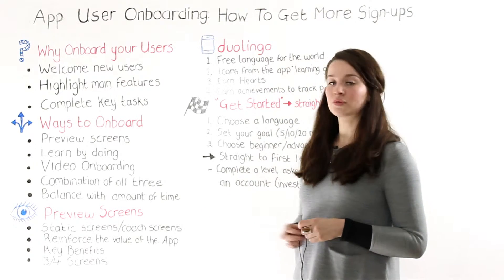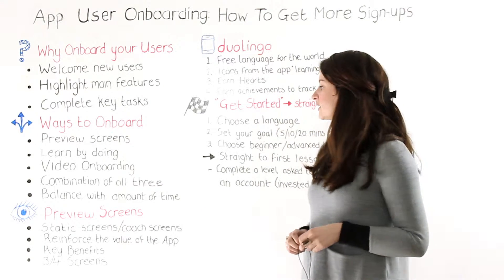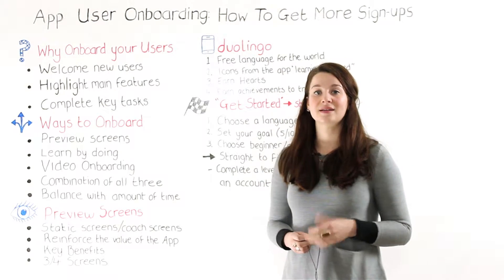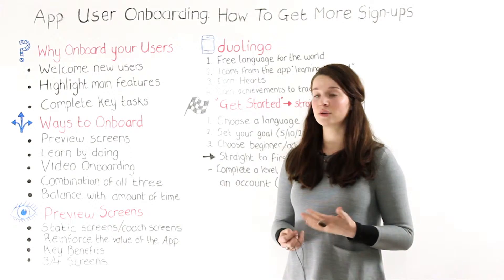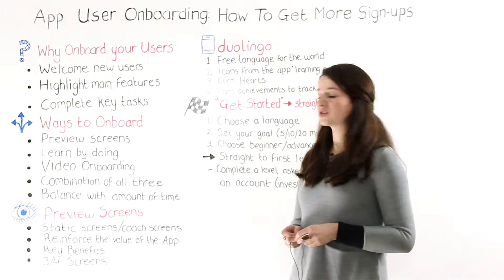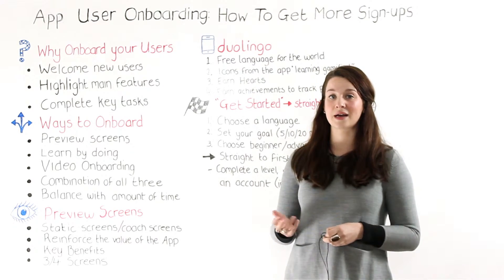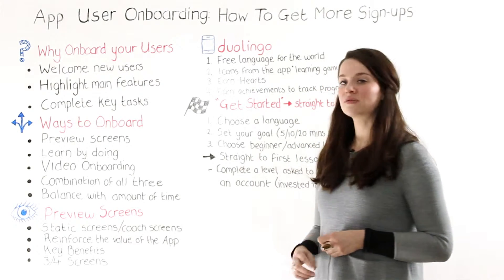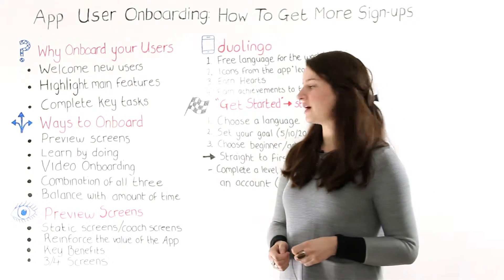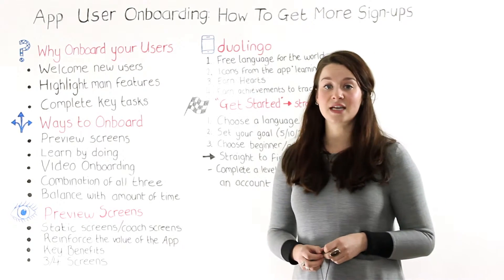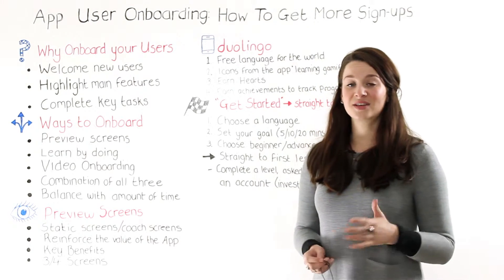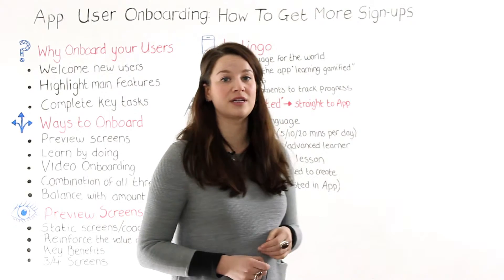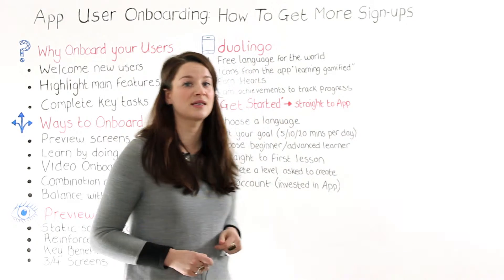Looking at preview screens, these are basically static screens — also known as coach screens. They reinforce the value of your app and highlight the key benefits. Usually about three or four screens is best.